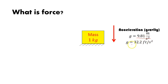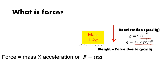That acceleration due to gravity occurs at 9.81 meters per second squared, or 32.2 feet per second squared. Because that acceleration acts on a mass, it produces what we call weight — the force due to gravity. So force equals mass times acceleration, F = ma, meaning your weight equals your mass times the acceleration due to gravity, pulling you toward the center of the earth.